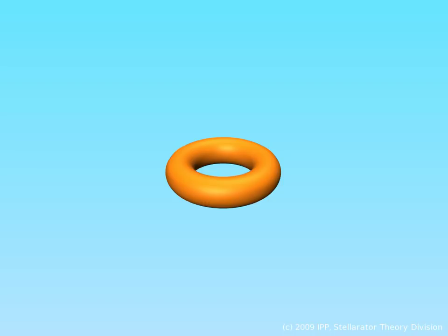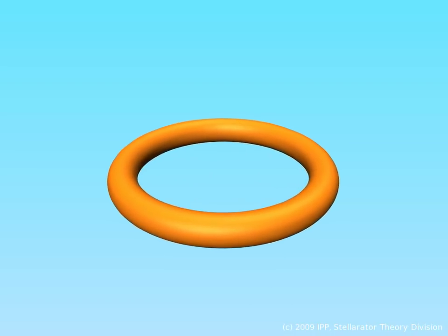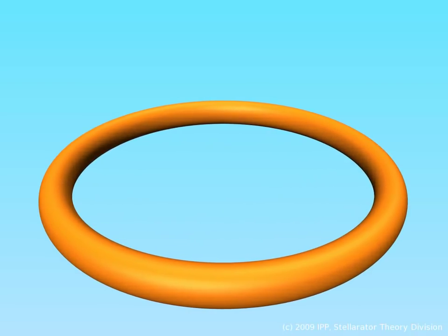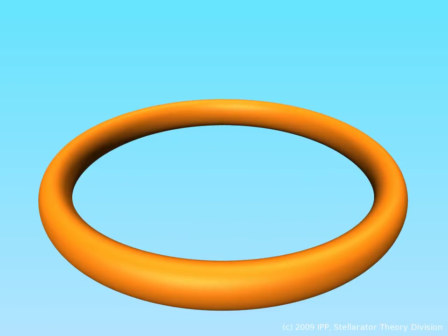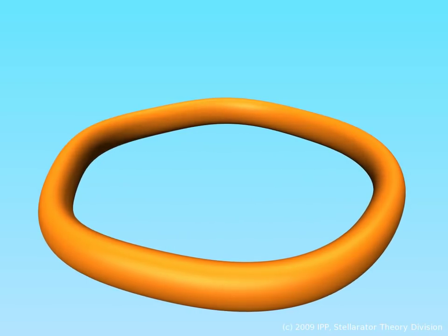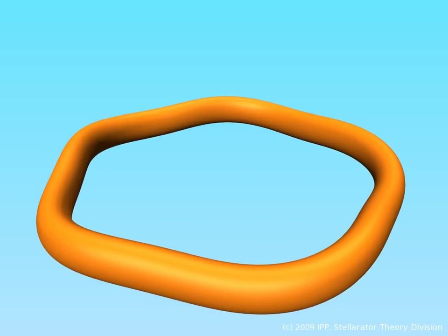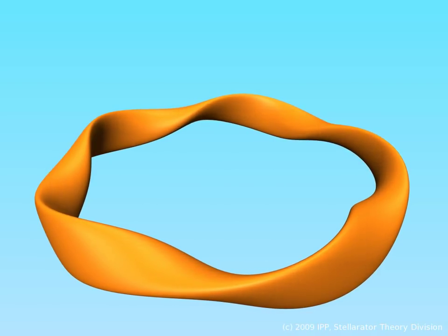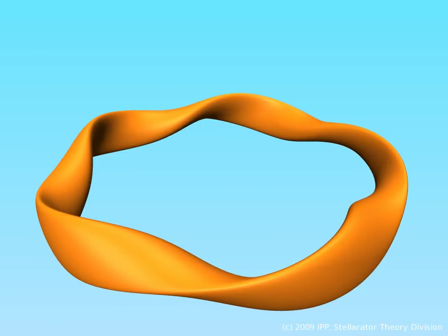Shaping of the magnetic surfaces plays a key role in determining the properties of the stellarator, allowing simultaneous improvement of plasma confinement and stability. Determining the ideal shape is far from simple, however, and only became possible at the end of the 1980s using a computer-aided optimization process.